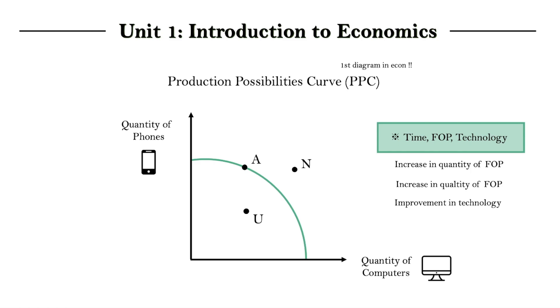That would allow us to produce more phones and computers. So any of these three changes can increase the amount we can possibly produce in this economy and the PPC itself shifts outwards, making the quantity and outputs at point N now attainable. And we call this increase in output potential growth, which we can think of as an increase in our potential to produce itself.